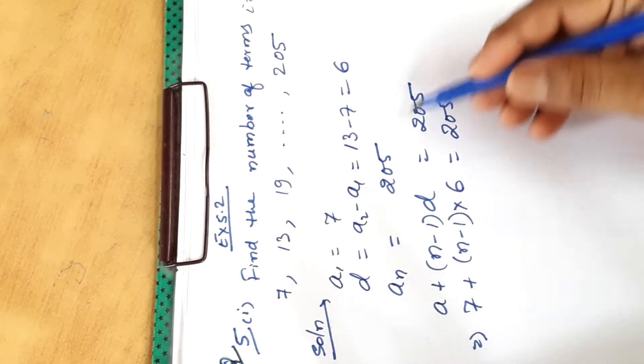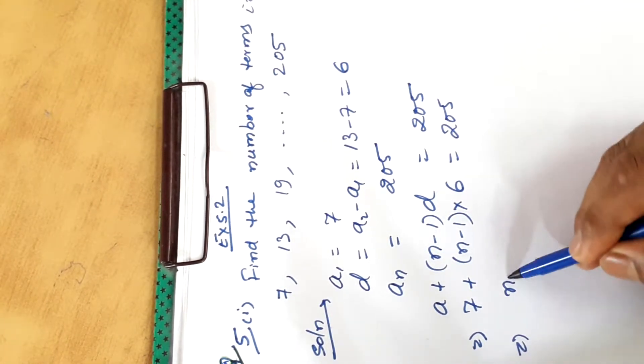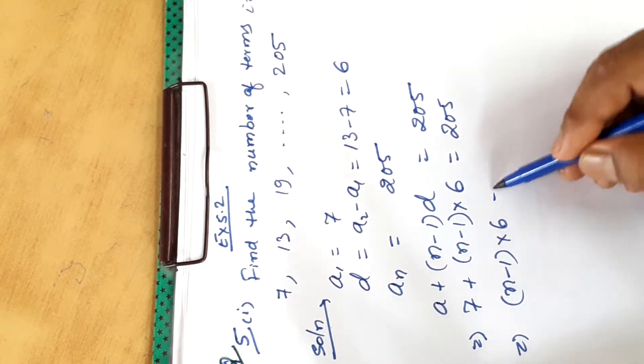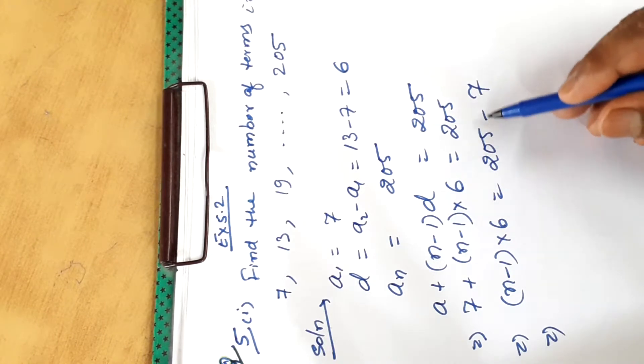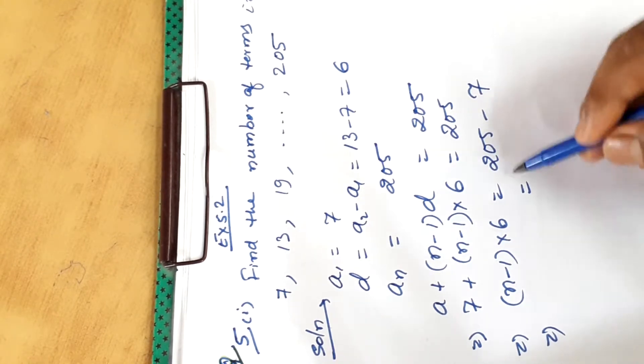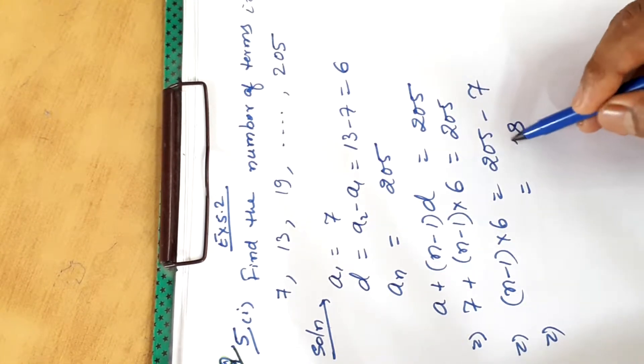First of all we will transfer 7. N minus 1 into 6 is equal to 205 minus 7. 205 minus 7 we get 198.